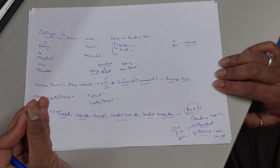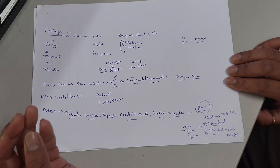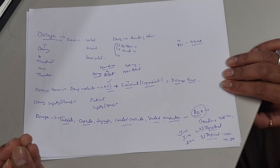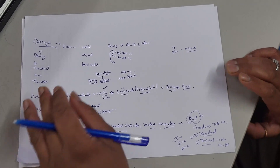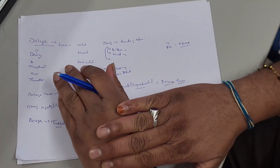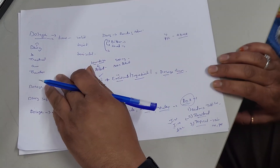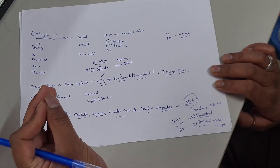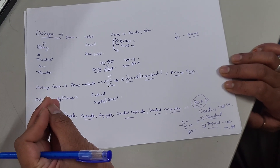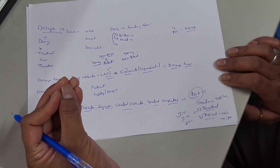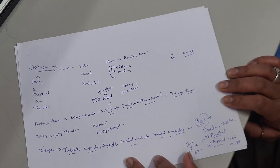Semi-solid forms also include transdermal dosage forms — drugs attached on the skin in the form of patches. Implants involve placement of the drug within body tissue. There are also inhalants, administered using inhalers.